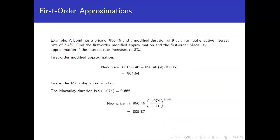So let's do an example. Let's say we have a bond. It has a price of $850.46 and a modified duration of nine when we use an annual effective interest rate of 7.4%. Let's use both of our approximation methods that we just developed to figure out what happens to the new price if the interest rate changes from 7.4 up to 8%.